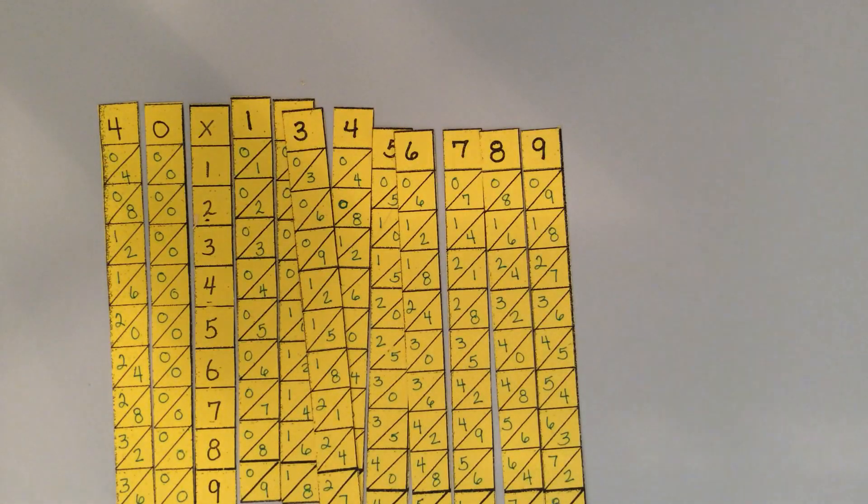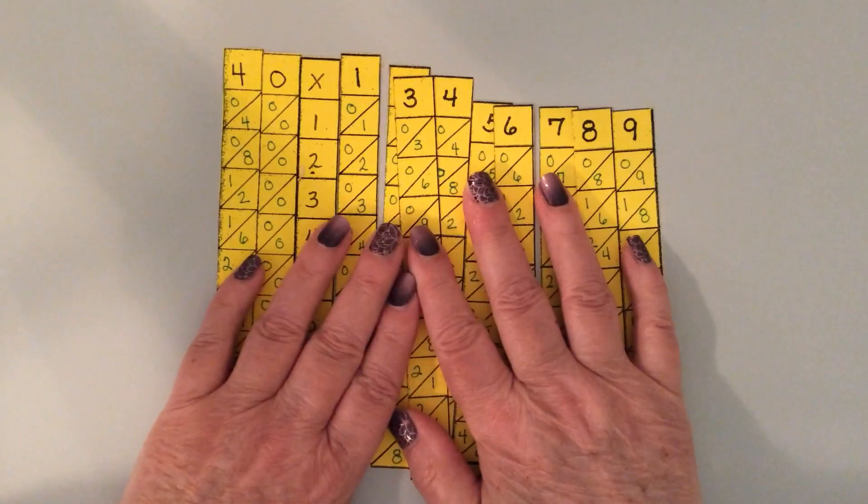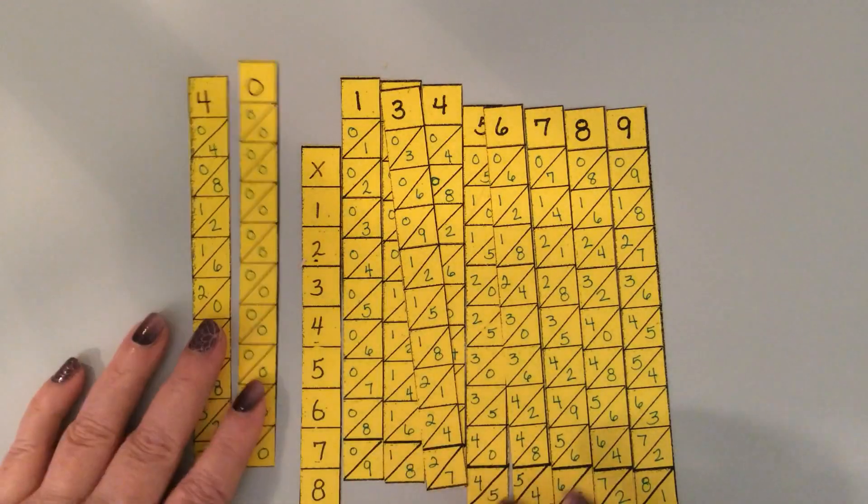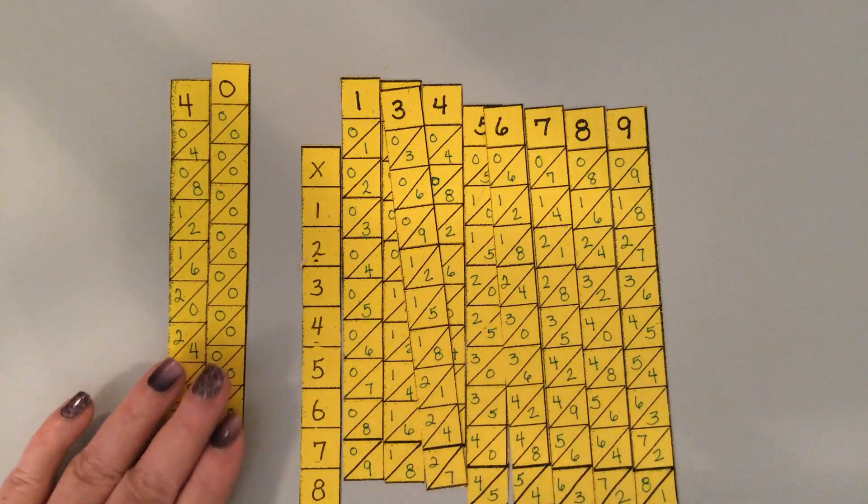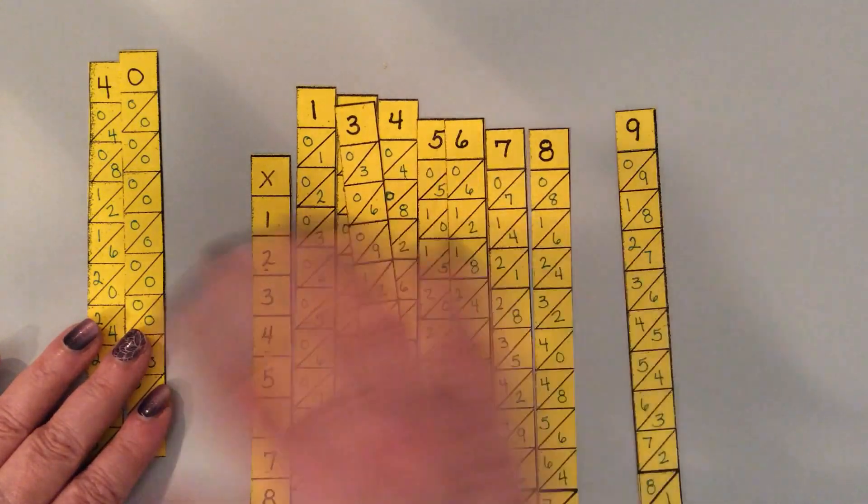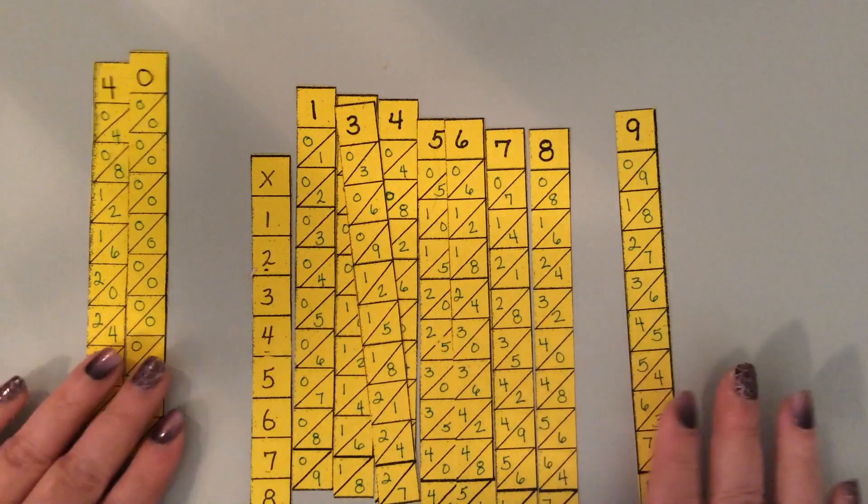You cut them out. So I made a couple extras. I made a zero bone which would just be all zeros, and I just made an extra four. You make as many bones as you need or as you want because you're limited by the bones that you've made.